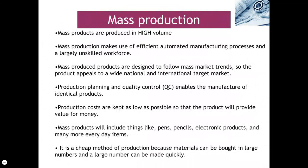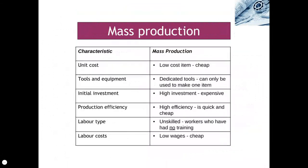Mass production is very similar to continuous production. Products are produced in high volume using efficient, automated manufacturing processes, following mass market trends. Biro pens are a good example. Production costs are kept as low as possible, with a very high initial investment, but once that's made it's a very cheap method of production. It can manufacture hundreds of thousands of products very quickly. It's a low cost item using very dedicated tools that can only make that one item — high investment, high efficiency, and workers are unskilled labourers with minimal training on the machinery.